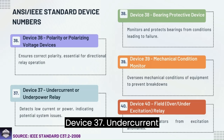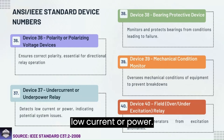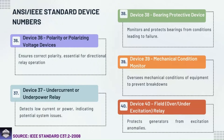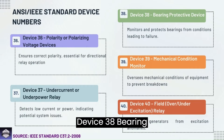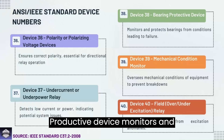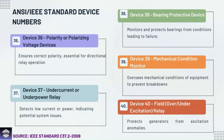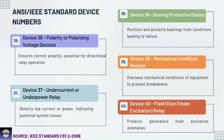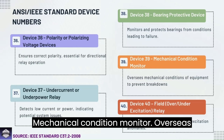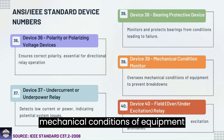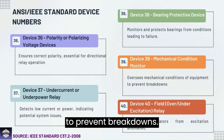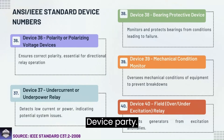Device 37: Under current or under power relay — detects low current or power, indicating potential system issues. Device 38: Bearing protective device — monitors and protects bearings from conditions leading to failure. Device 39: Mechanical condition monitor — oversees mechanical conditions of equipment to prevent breakdowns.